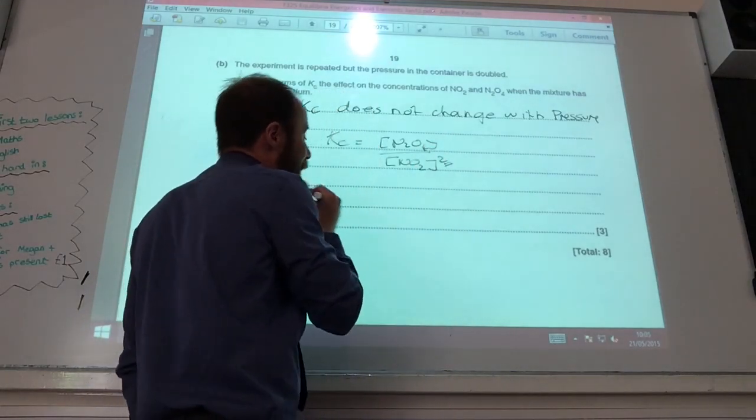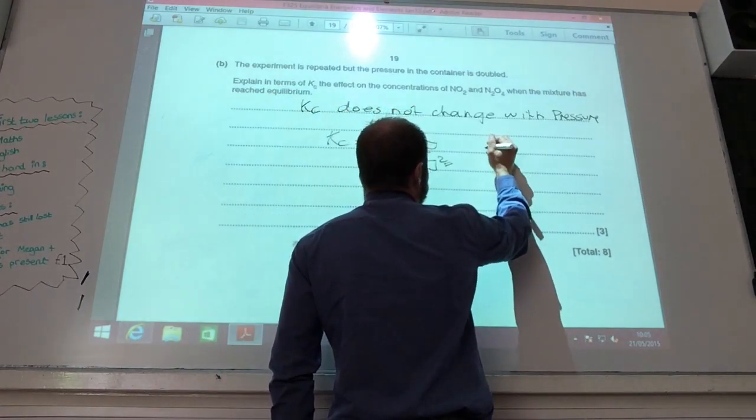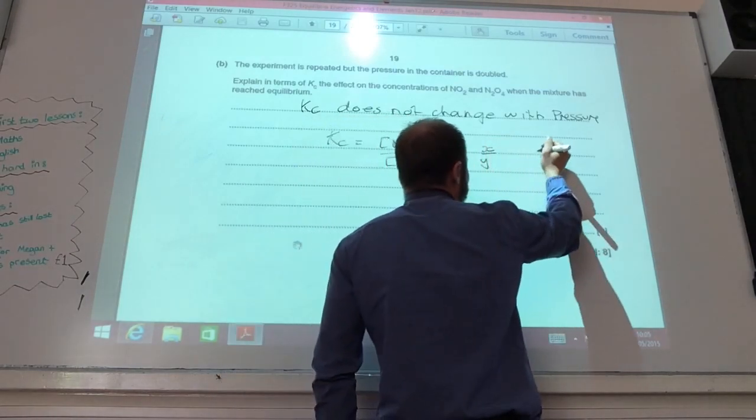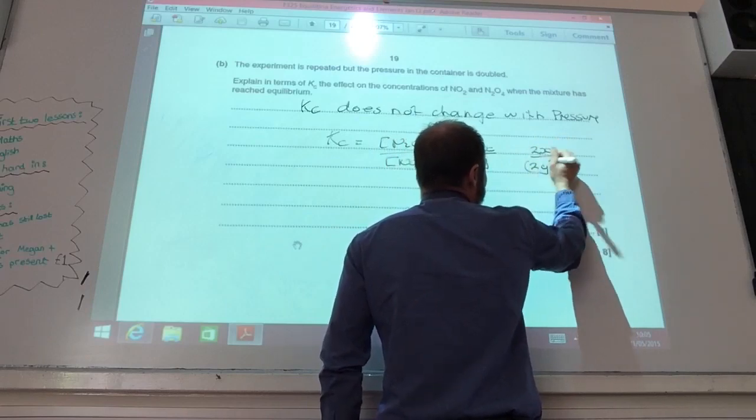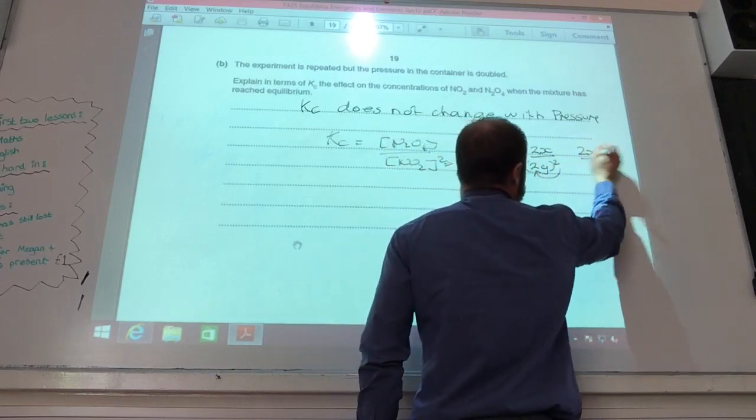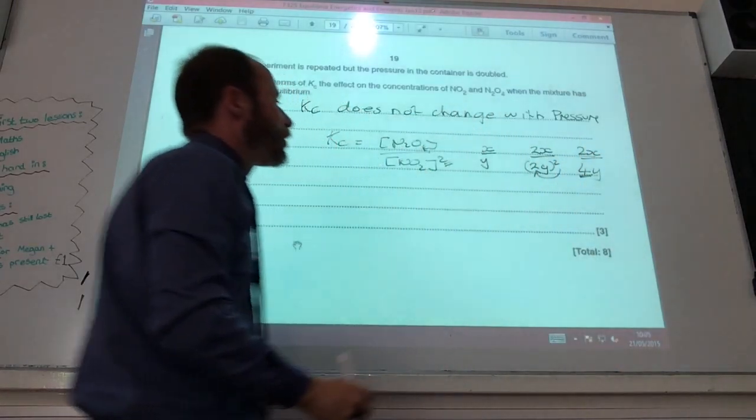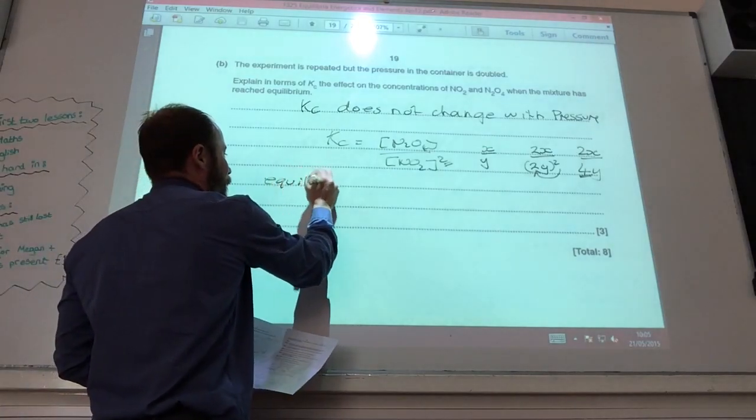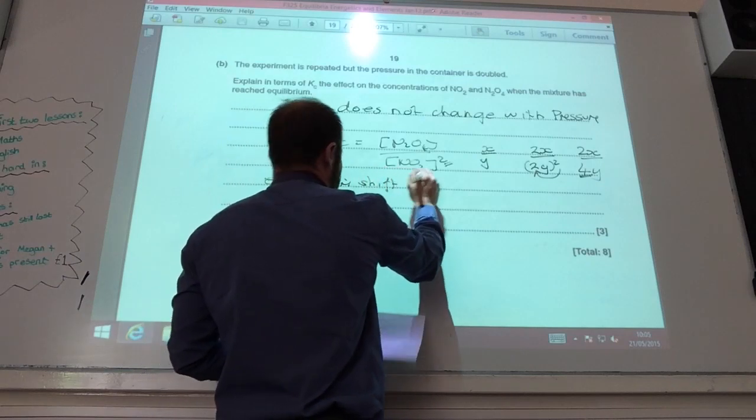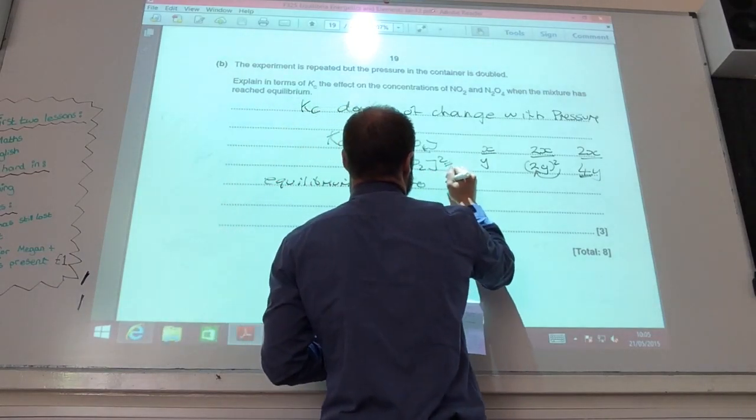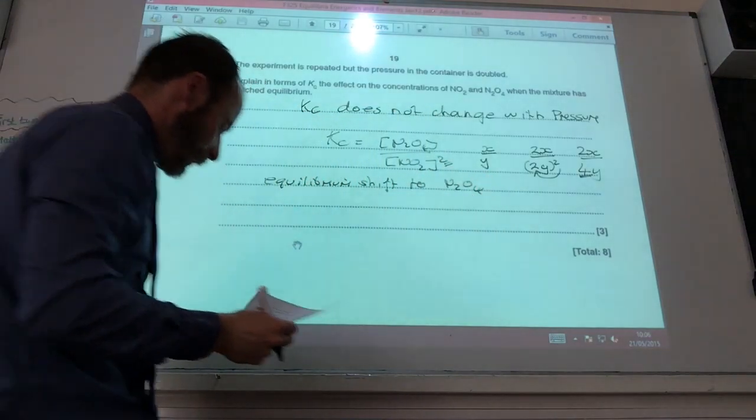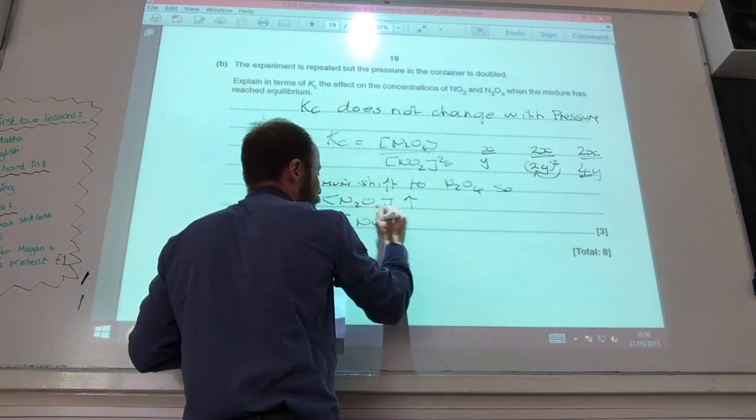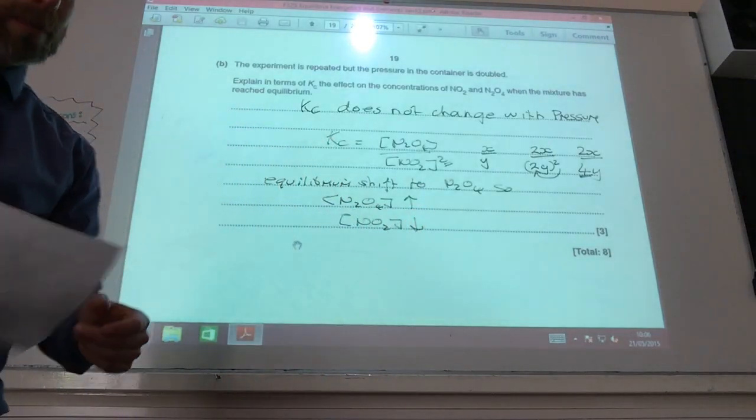If you think about it, if originally it was X over Y squared, I double it, it then becomes 2X over 2Y, but that's squared. So that becomes 2X over 4Y. It's had a much larger effect down here. So because it's had a larger effect, the equilibrium will shift to the side of N2O4. So concentration of N2O4 increases and concentration of NO2 decreases to maintain Kc.